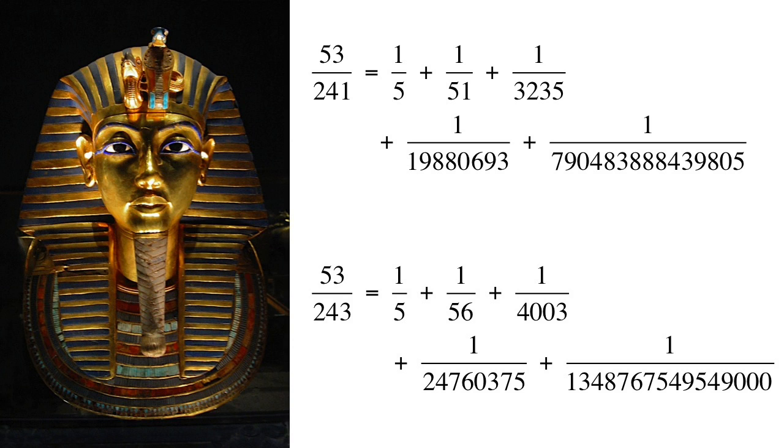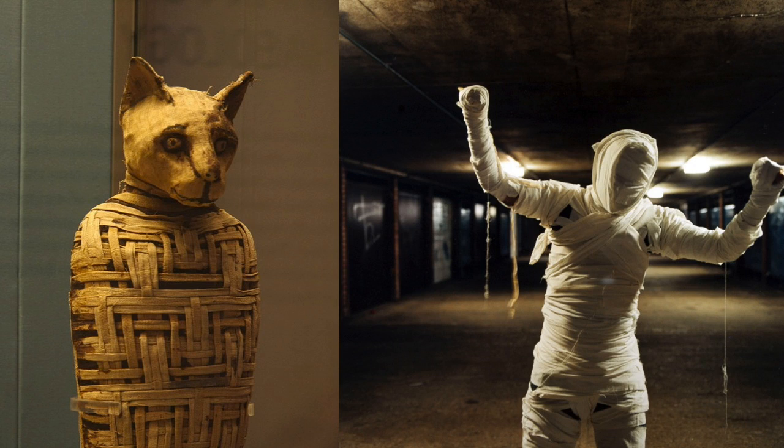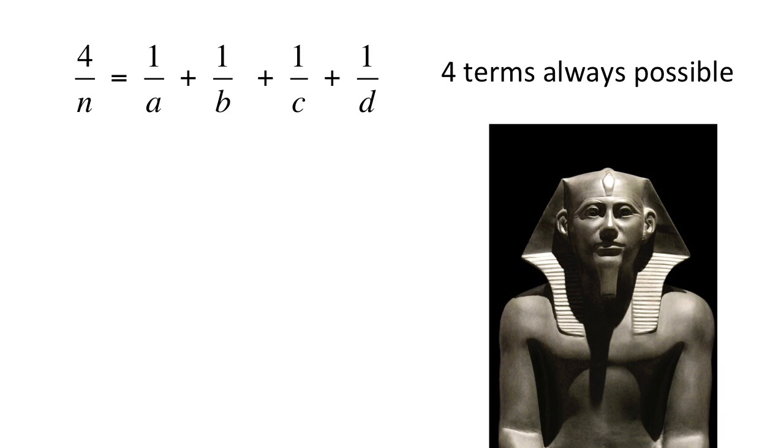However, the greedy algorithm can produce denominators that are big enough to scare a mummy and a mummified cat. So, for any integer n, the fraction four over n can be written as an Egyptian fraction with at most four terms.